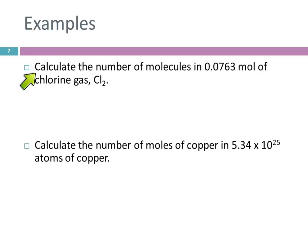This first one, calculate the number of molecules in 0.0763 moles of chlorine gas, Cl2. So the unit we're given is mole. This is dimensional analysis again. And I know some of you have a hard time with that. Now is the time to get that figured out. Now is the time because this chapter is going to use it a lot. So the unit that we're given is mole, and what are they asking us to find? The number of molecules.